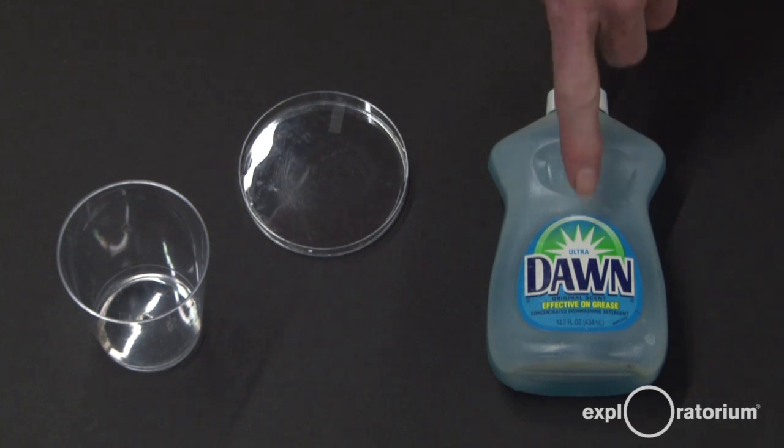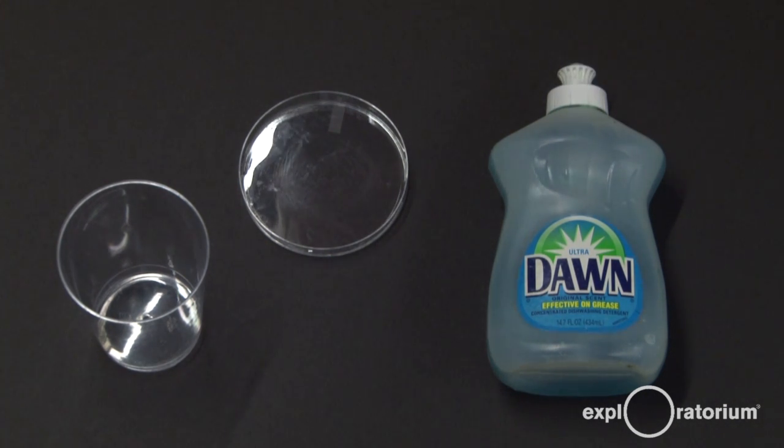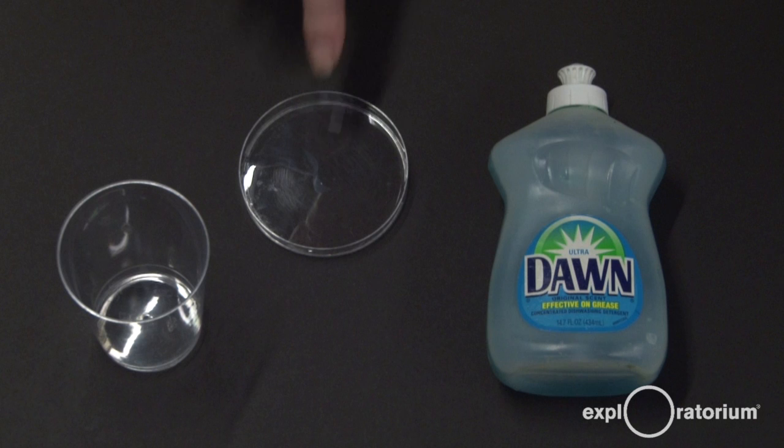Here are the materials you're going to need. You'll need dishwashing detergent. The best one we've found is Dawn Blue Original Scent. You'll need a cup, and then you'll need a shallow dish. We're using a petri dish here.